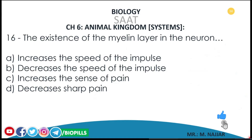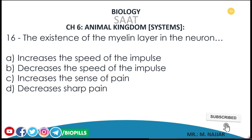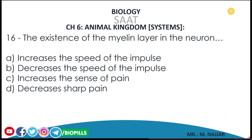Question number 16: the existence of the myelin layer in the neuron — a) increases the speed of the impulse, b) decreases the speed of the impulse, c) increases the sense of pain, d) decreases sharp pain.